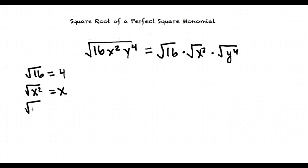The square root of y to the 4th is going to be y squared, since y squared times y squared is y to the 4th. So, the square root of 16 times x squared times y to the 4th is going to be 4 times x times y squared.